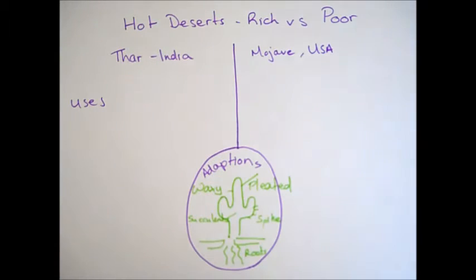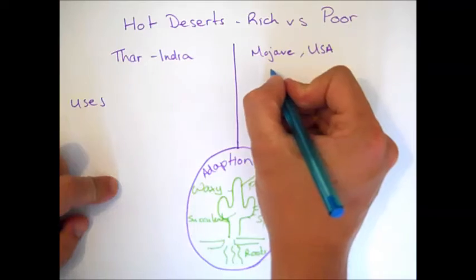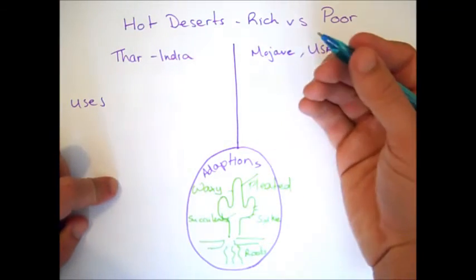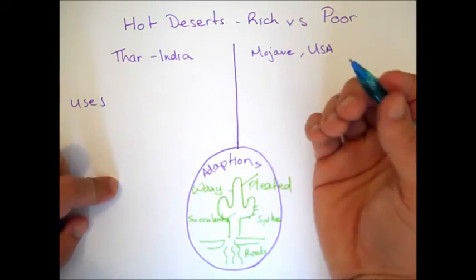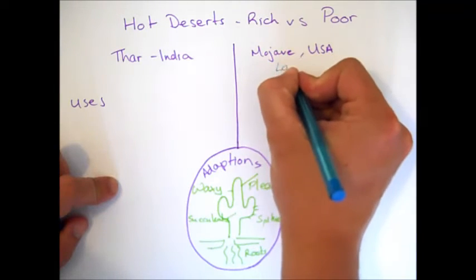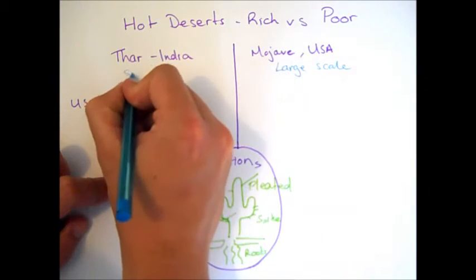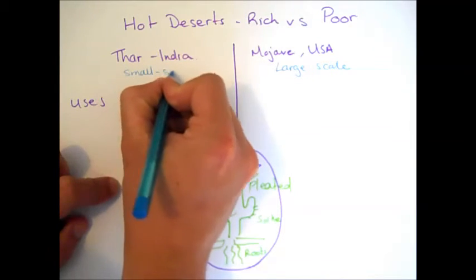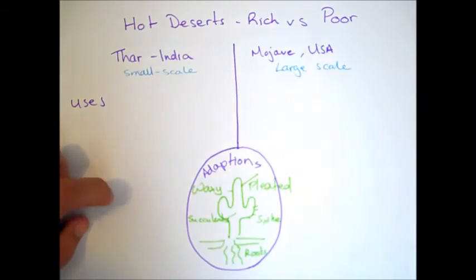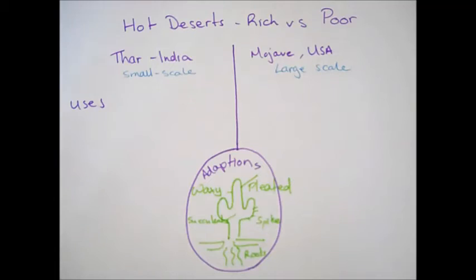Now, the big thing to note straight away is the difference in terms of the uses or economic opportunities. And really, the way to remind yourself of this is the scale. In the Mojave, all of the major development uses are on a large scale. Whereas in the Thar, they generally are on a much smaller scale. So, that's kind of the big thing. If the question asks you to compare, that's the first point you should make.